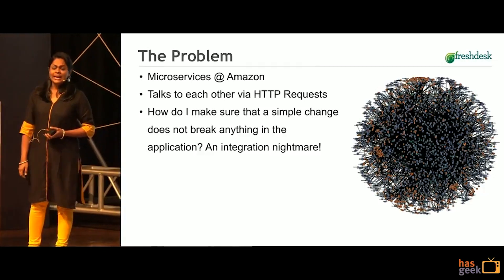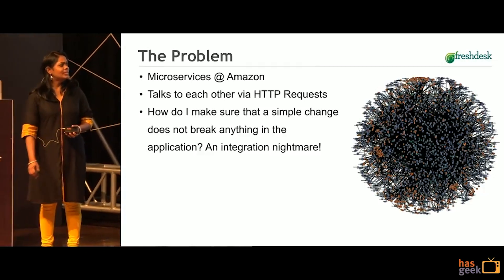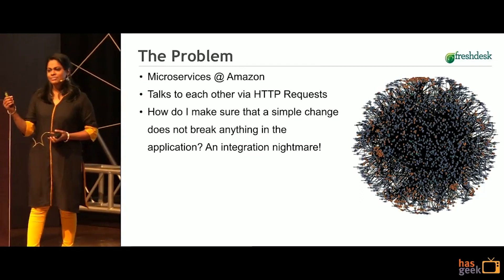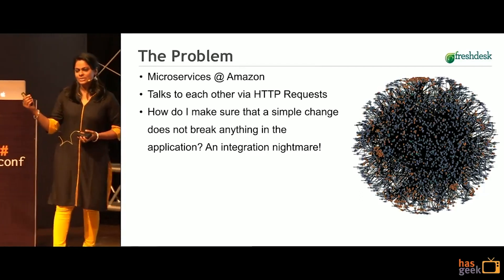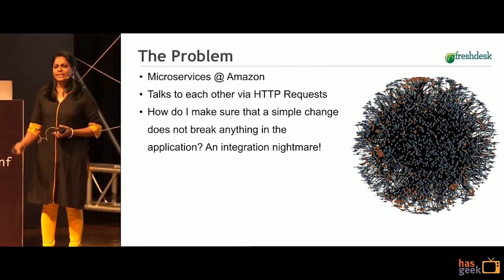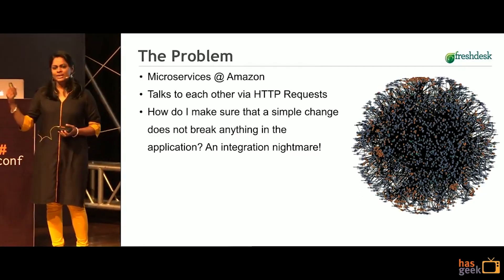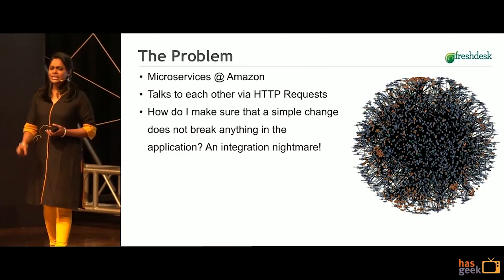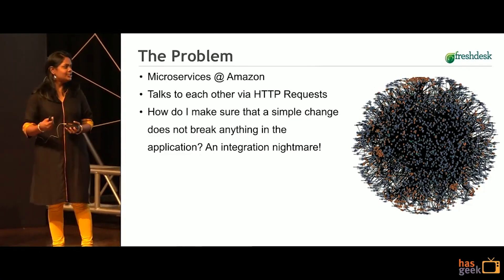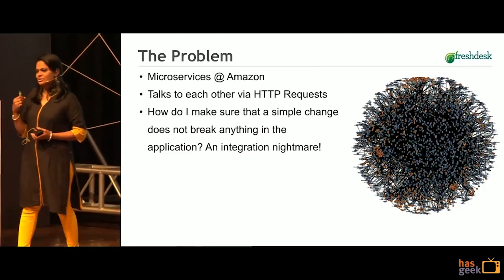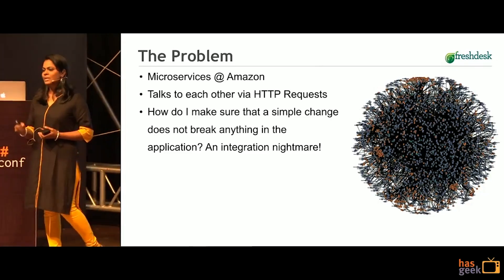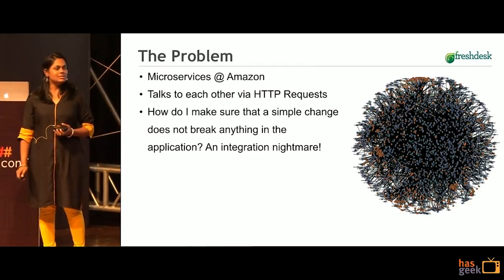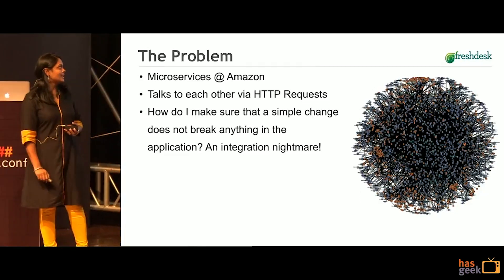It's actually the internal architecture of the microservices in Amazon. In such a complex system, there arises one problem: each team actually owns their own microservice and they keep making changes, and there could be other services which would consume the service. So how do I ensure that any change that I make to my system does not actually affect the consumers?